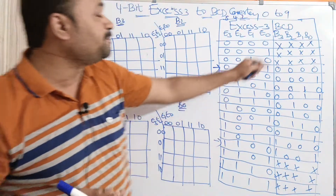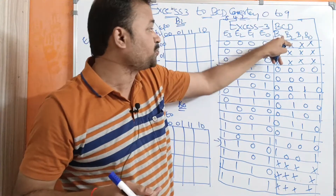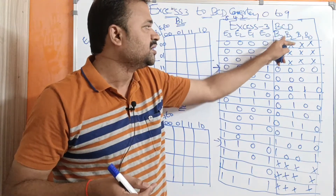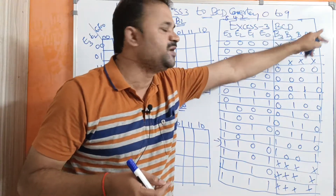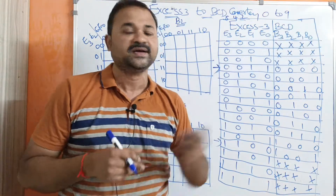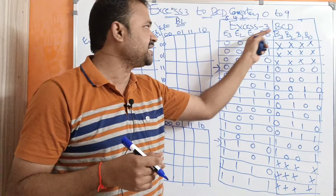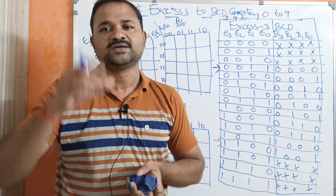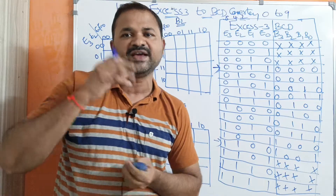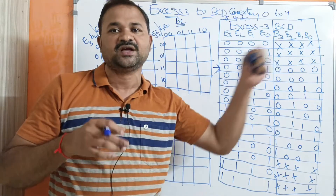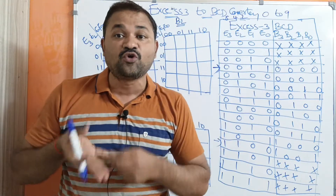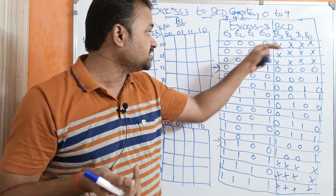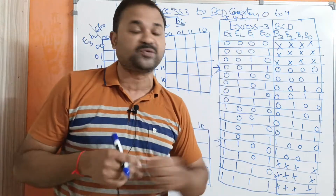Now we need to simplify the output code, that is BCD code: B3, B2, B1, and B0. Here we have 4 inputs: E3, E2, E1, E0. So for simplifying that expression, we need to use a 4-variable Karnaugh map, because here we have 4 inputs. So first let us simplify B3.